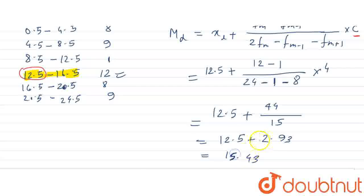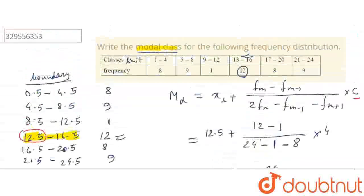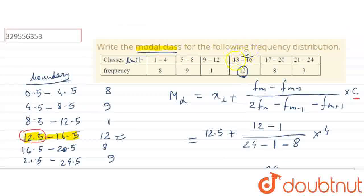The mode value is 15.43 and modal class is 13 to 16. We can write this as 12.5 to 16.5 if we have done it in boundaries. If asked for modal class, we have to say 13 to 16 is the modal class. Thank you.